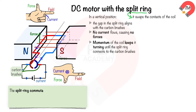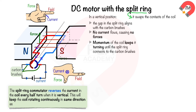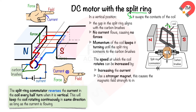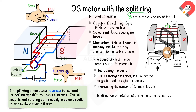The split ring commutator reverses the direction of the current in the coil every half turn when it is vertical, keeping the coil rotating continuously in the same direction as long as current flows. The speed of rotation can be increased by increasing the current, using a stronger magnet to increase magnetic field strength, or increasing the number of turns in the coil. The direction of rotation can be changed by reversing the current or reversing the poles of the magnet.